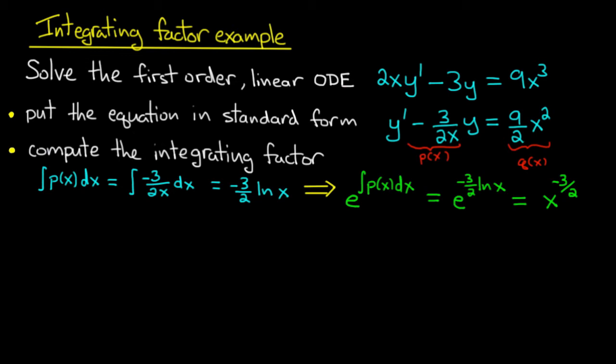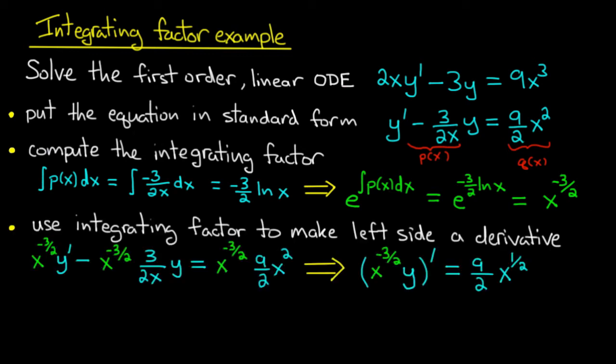So what would be the next step? We would want to multiply both sides of the equation by the integrating factor, and doing so would make the left side a derivative. So we multiply both sides of this equation in standard form by the integrating factor and we get this equation here. It's just that equation multiplied by x^(-3/2).